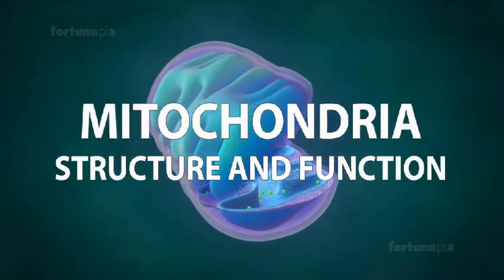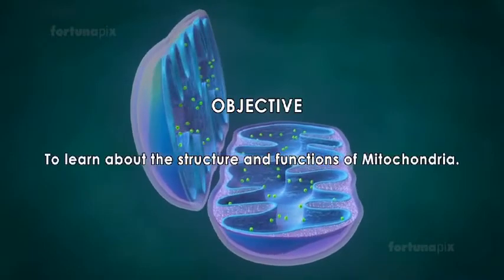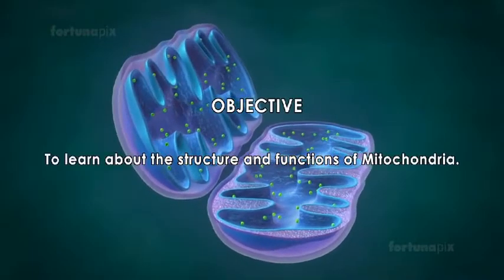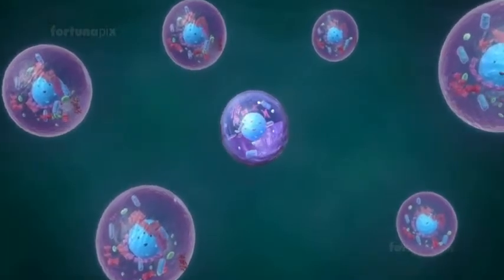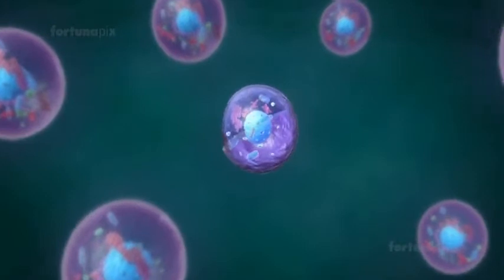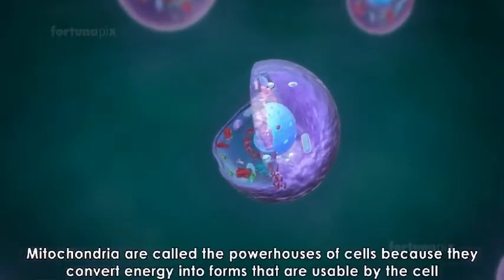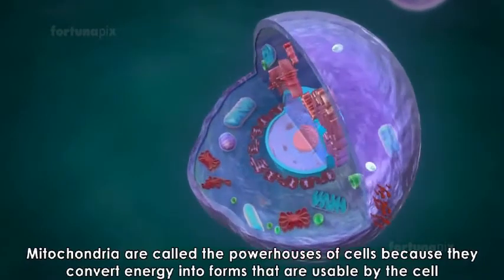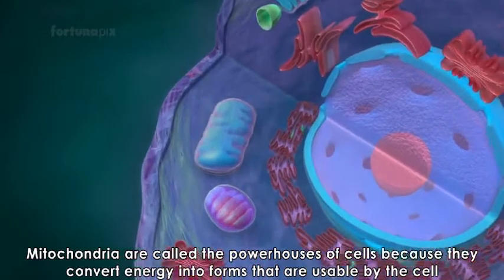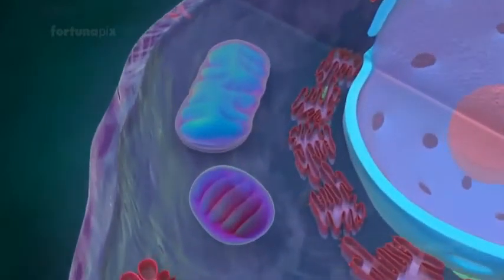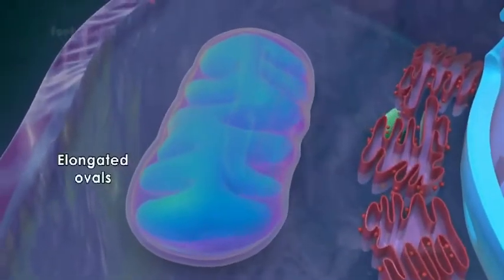Mitochondria structure and function: objective to learn about the structure and functions of mitochondria. Mitochondria are located in the cytoplasm of cells and are among the largest cell organelles. They are called powerhouses of cells because they convert energy into forms that are usable by the cell. Mitochondria vary in shape from almost spherical to elongated ovals.